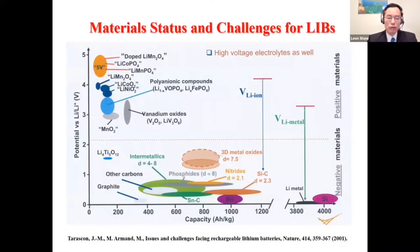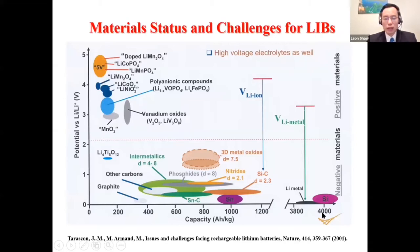The anode material for lithium-ion batteries is graphite, but it could be replaced by silicon anode material in the near future because silicon has a theoretical capacity about 10 times higher than graphite.